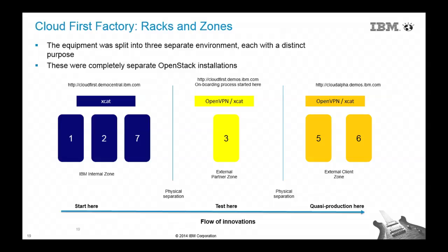Hello, everybody, good morning. Now you know what was the mission of the Cloud First Factory. We built up three different zones — each one physically separated, each with its own OpenStack installation and ecosystem. We had one zone inside our firewall — the innovation zone — where projects hit the first time in order to be created and developed. We held some hackathons in that zone, and it was very productive. It was the incubation zone for the Bluemix project.